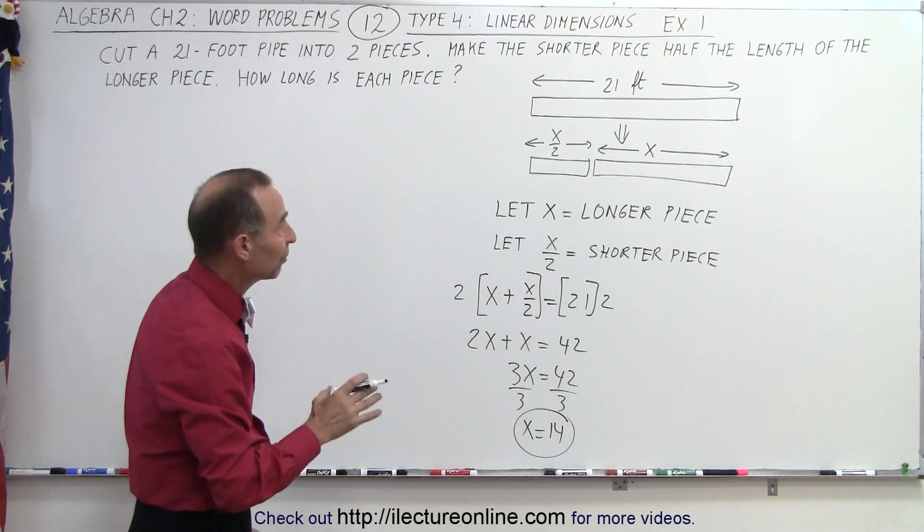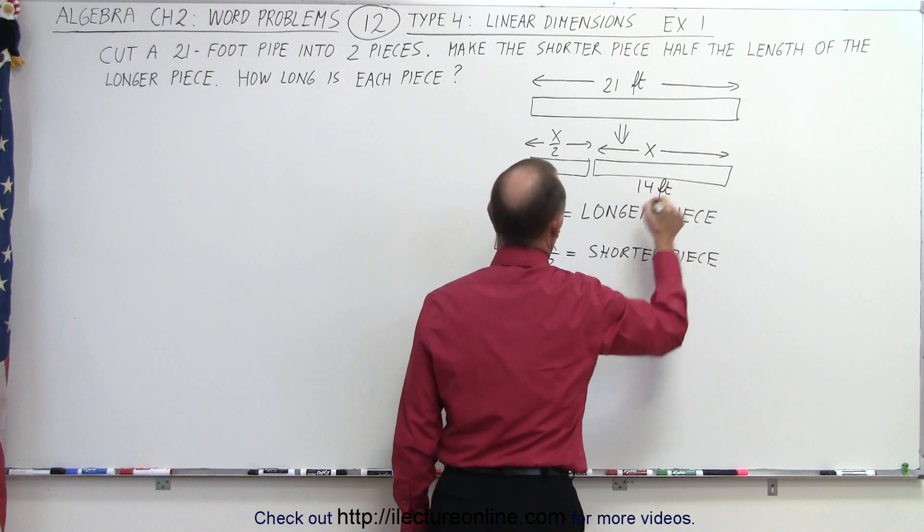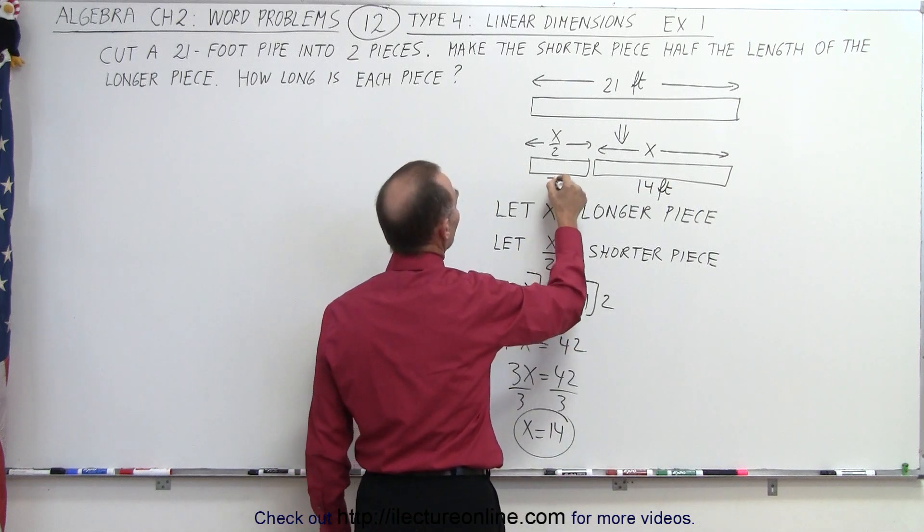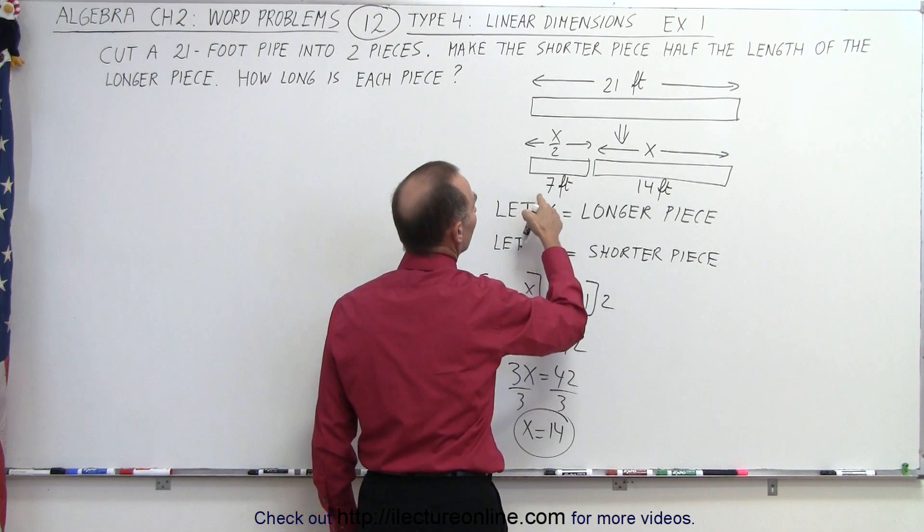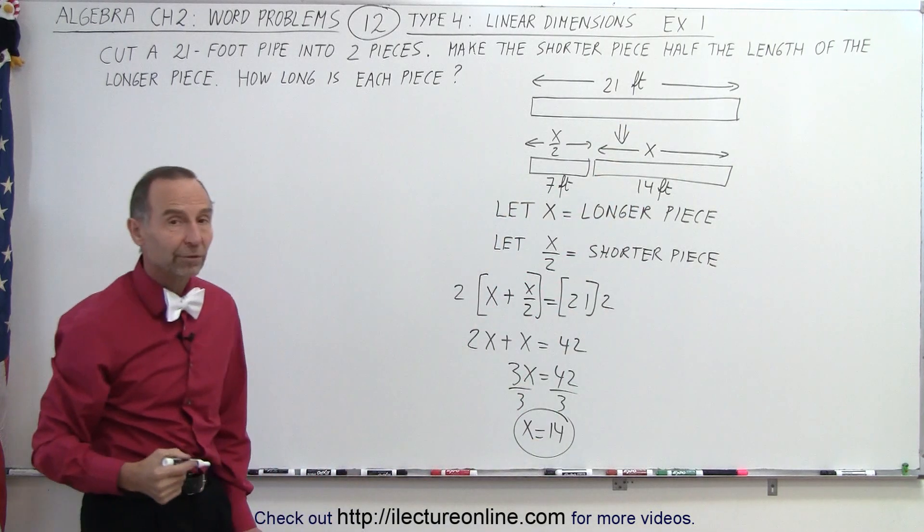That means the longer piece needs to be 14 feet. x is 14 feet. And the shorter piece is half of that, which means it is 7 feet. You can clearly see that 7 feet plus 14 feet does indeed add up to 21 feet.